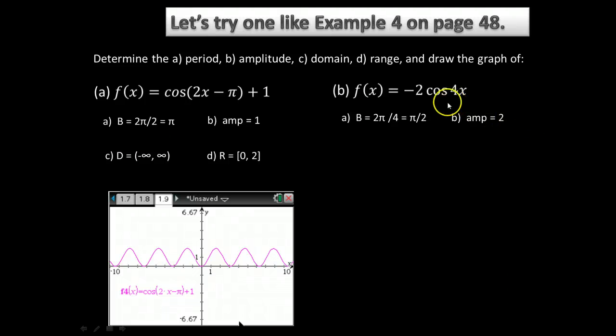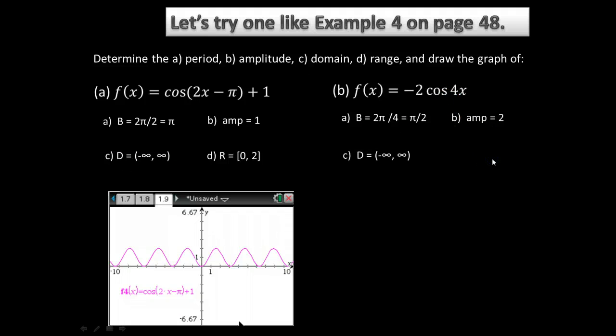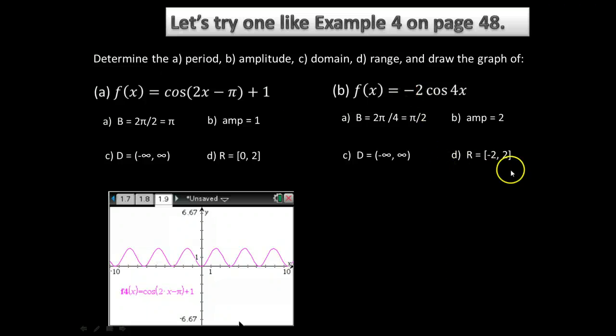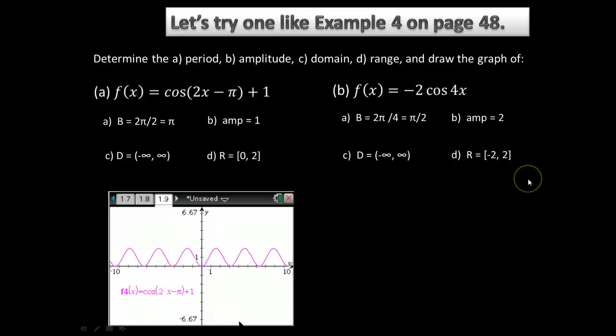Part C, the domain. Again, it's a cosine, so all real numbers, negative infinity to infinity. And then our range - we have an amplitude of 2, so instead of going from negative 1 to 1, our range is going to go from negative 2 to 2.